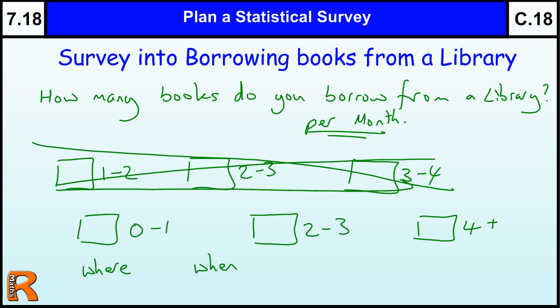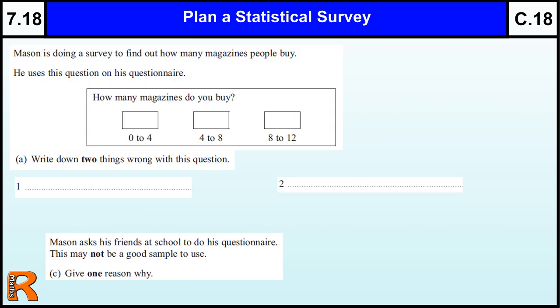Let's have a look at a GCSE question. This is on an exam paper recently. Mason's doing a survey to find out how many magazines people buy. He used this question on his questionnaire: How many magazines do you buy? Write down two things wrong with this question.